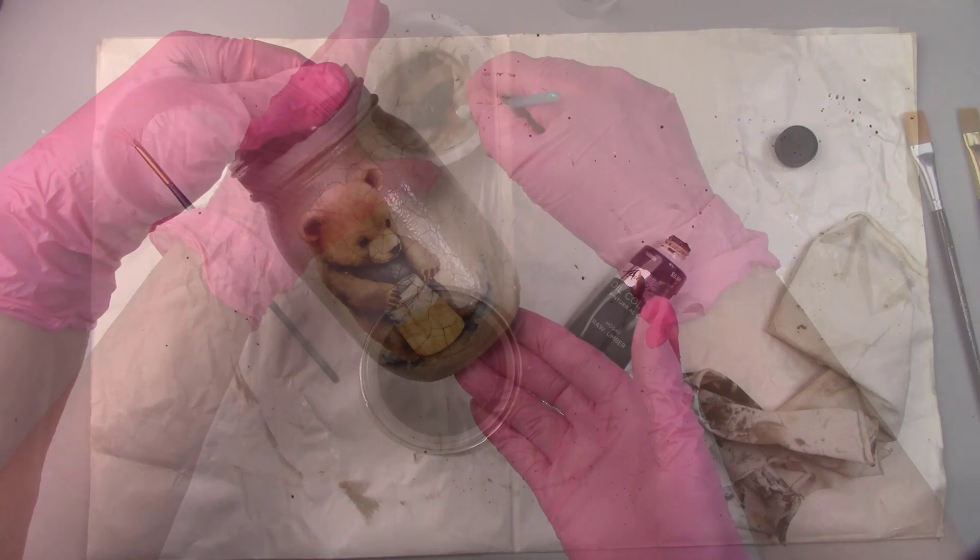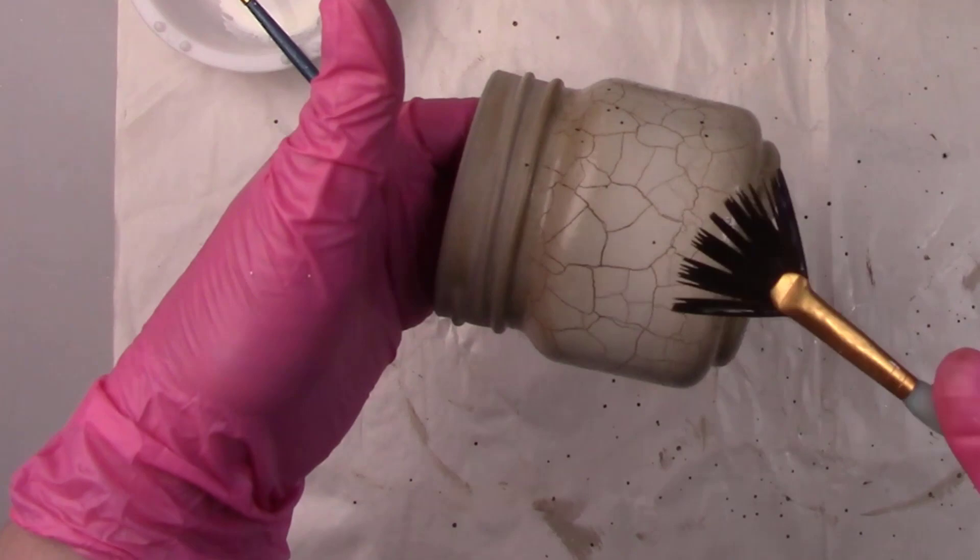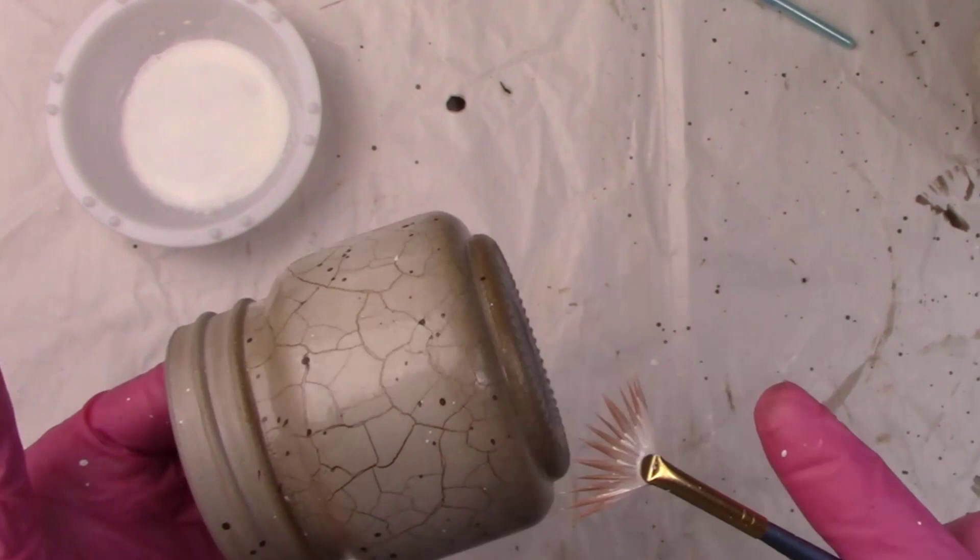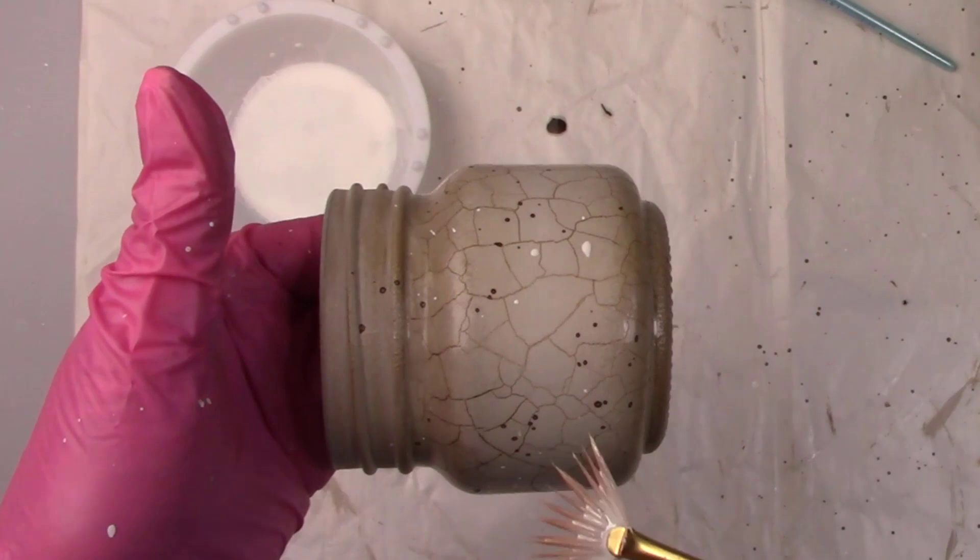One final step for that vintage look. I mixed some dark brown paint and some cream paint with water to make them very runny. I'm splattering the paint on the jars with a fan brush. And wow, that really does give it that vintage worn out look. Now I know I just said nothing water-based, but this is just a few little splatters of paint, so it'll be okay.